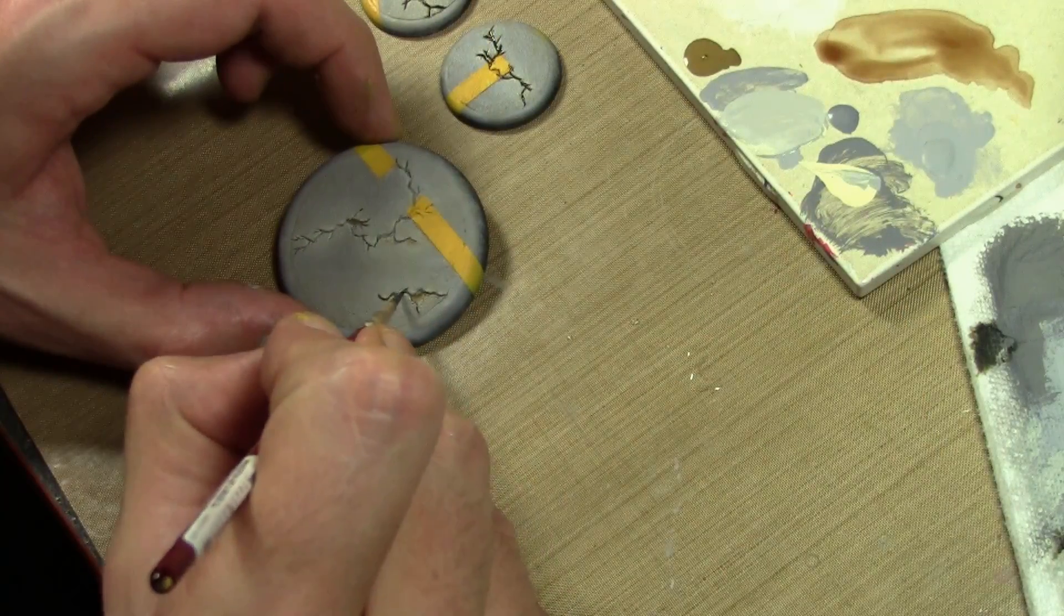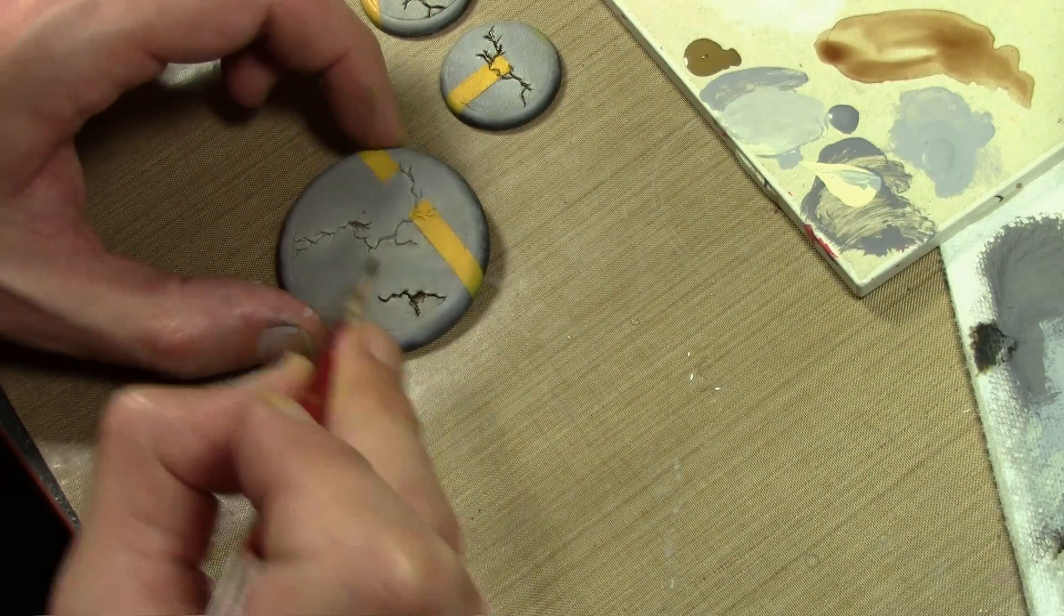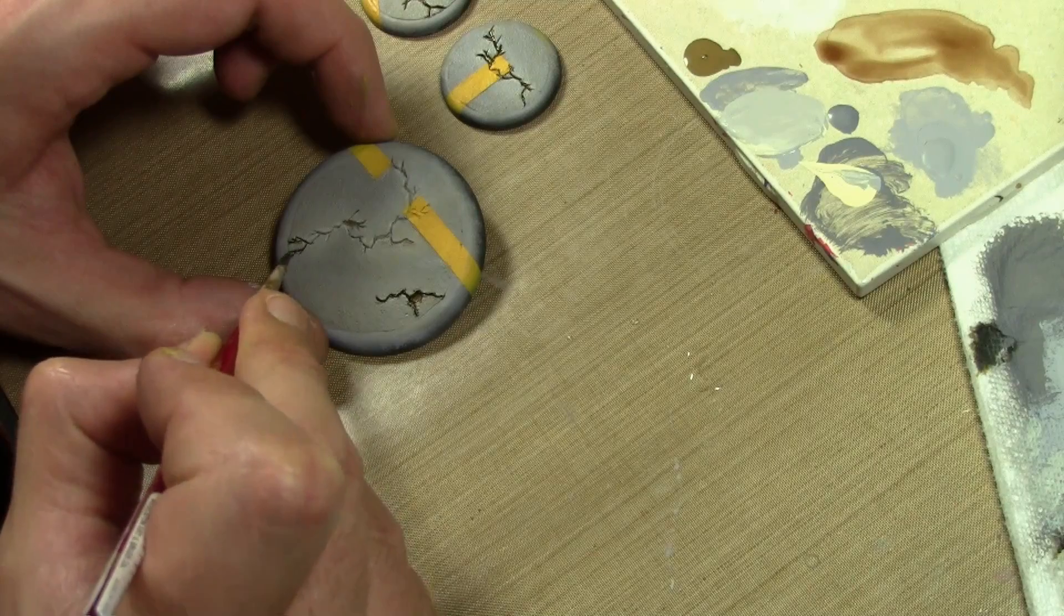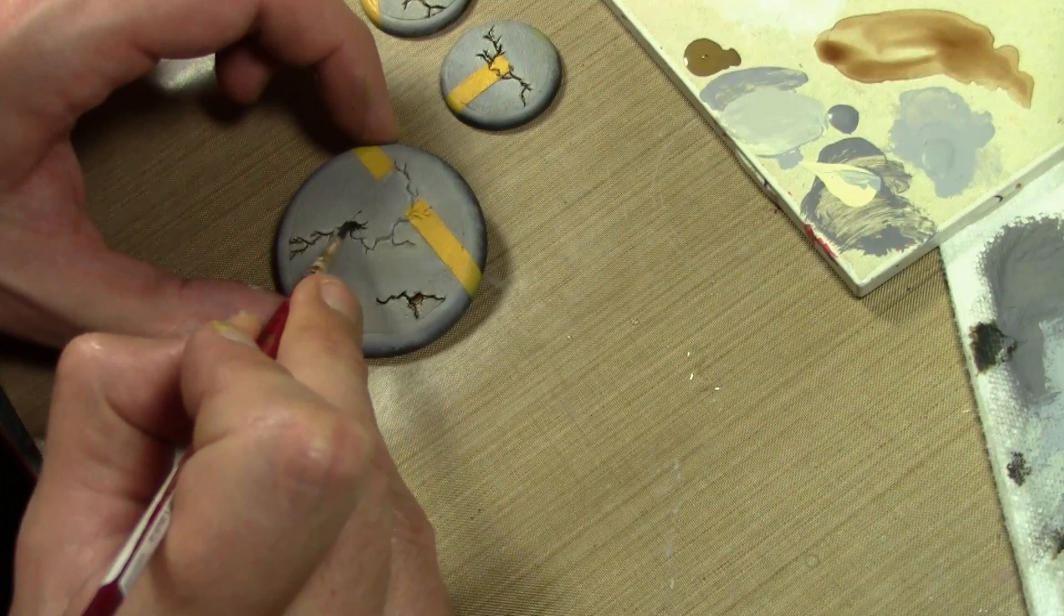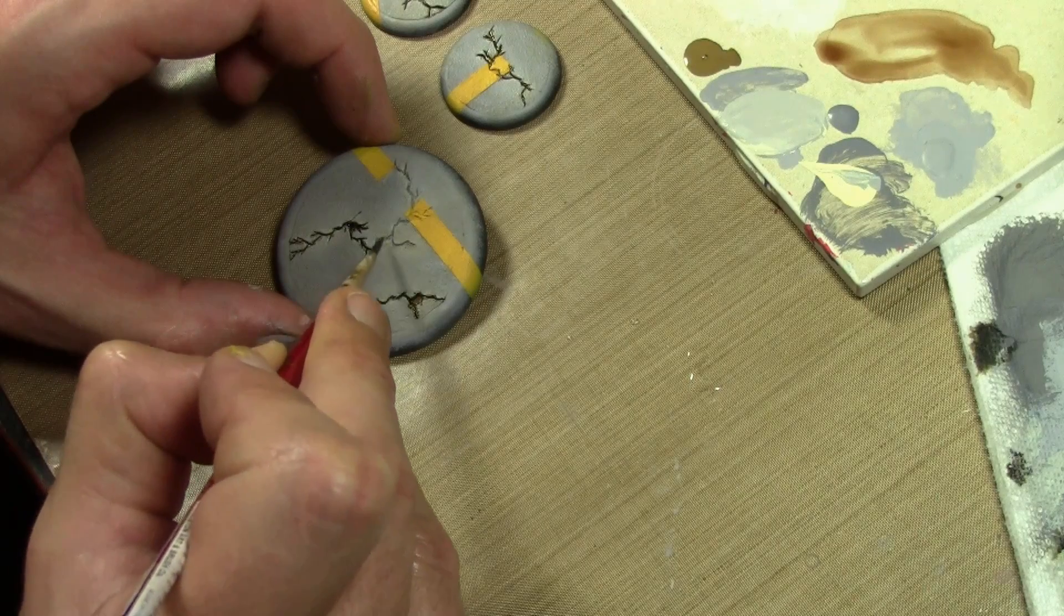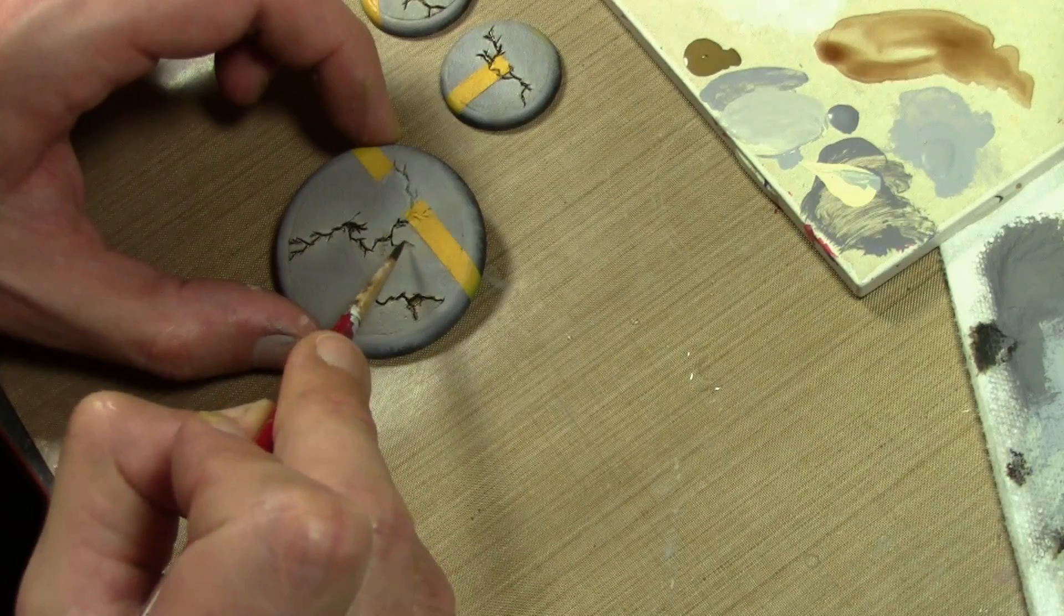To get some real good contrast in the cracks, I added a very thick ink wash of brown and black ink. And this is the point where I had to, afterwards, go back and redo the edging on the cracks. Because I was a wee bit off applying this wash here and there.